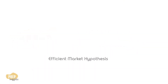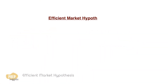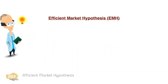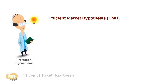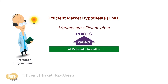The Efficient Market Hypothesis, or EMH in short, was originally developed by Professor Eugene Fama. According to the theory, markets are efficient when prices reflect all relevant information at any point in time.